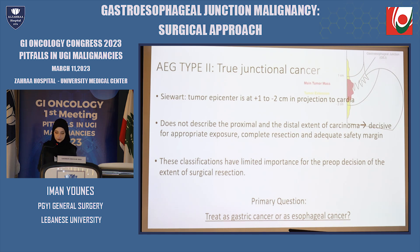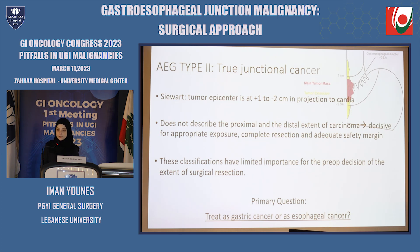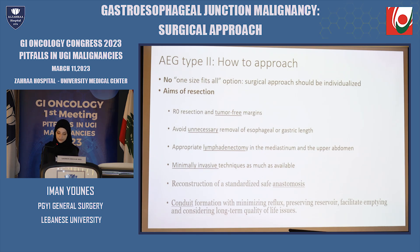The most discussed type in terms of surgery is AEG type 2, or true junctional cancer. Technically, these cancers can be resected by a gastrectomy with a transhiatal extension and distal esophageal resection, or by an esophagectomy with combined resection of the cardia and proximal stomach. The Seward classification refers to the center of the tumor and does not exactly describe the proximal and distal extent of the carcinoma. In practice, the oral extent of esophageal infiltration is decisive for appropriate exposure, complete tumor resection, and an adequate safety margin in an abdominal transhiatal approach. We aim for an R0 resection — a resection without residual tumor and with tumor-free proximal, distal, and circumferential margins.